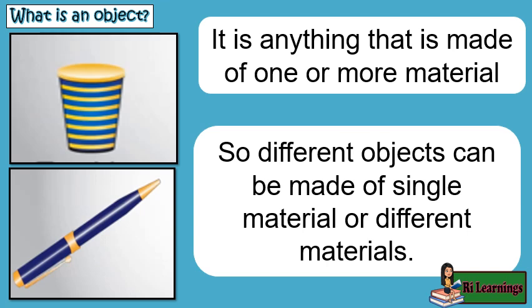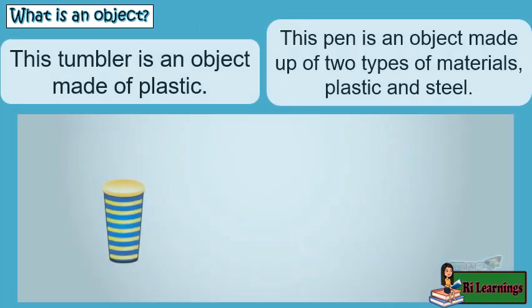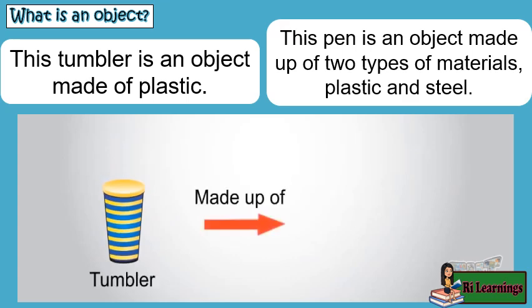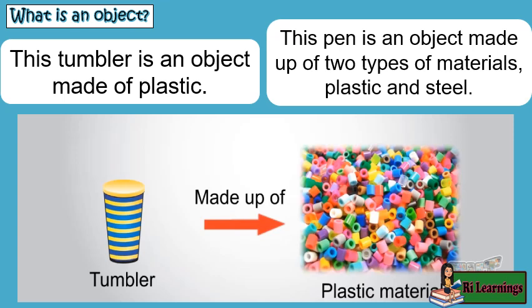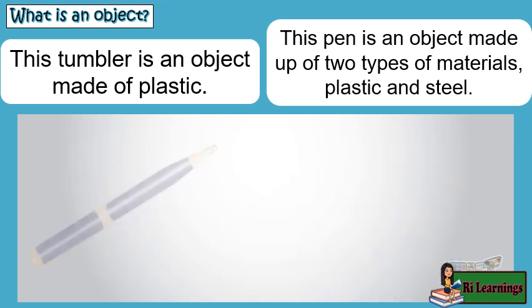What is an object? It is anything that is made of one or more materials. So different objects can be made of a single material or different materials. For example, this tumbler is an object made of plastic, and this pen is an object made up of two types of materials: plastic and steel.